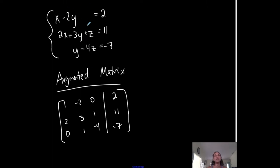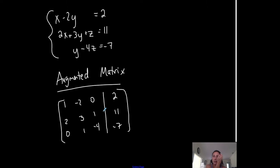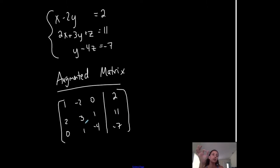This is the augmented matrix. It represents the coefficients, the equal sign — this line represents the location of the equal sign — and these are the constants. This is my augmented matrix for this system. What we end up trying to do is manipulating this augmented matrix to look a certain way.